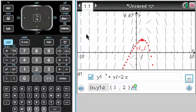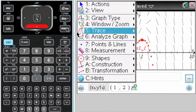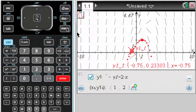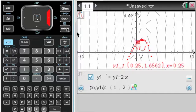And now if I go to trace, graph trace, let's start at 0, let me get to 1. At 1, it's at 2, which is my initial condition.